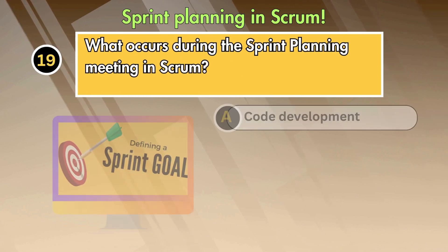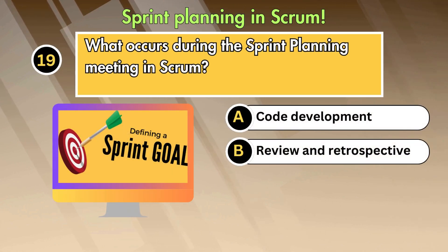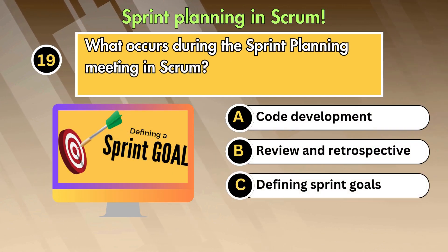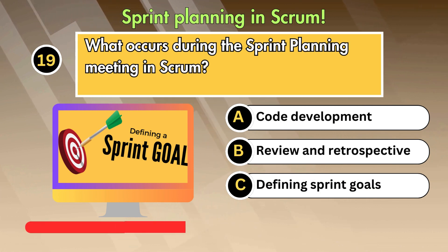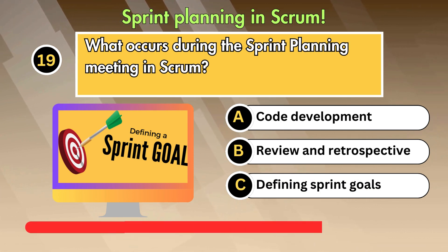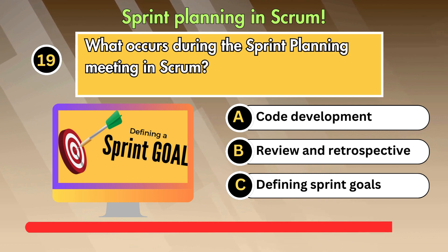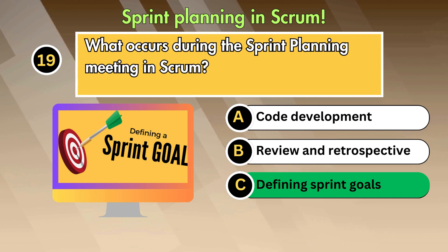Question 19: What occurs during the sprint planning meeting in Scrum? Option 1: Code development. Option 2: Review and retrospective. Option 3: Defining sprint goals. Answer is: Defining sprint goals.